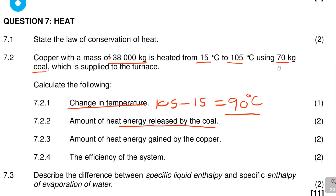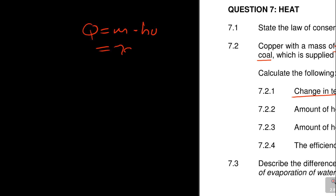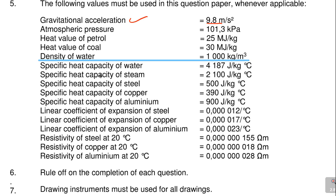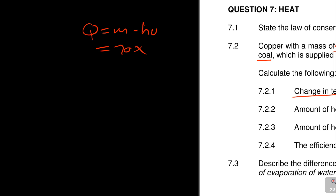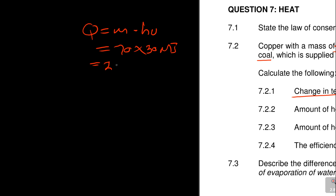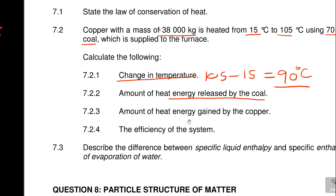So Q equals m times HV — heat value. The mass is 70 kg of coal. Go to the beginning of your notes and you will find the heat value of coal there. The heat value of coal is 30 MJ. So it's 70 times 30, which gives 2,100 MJ — megajoules. That's the amount of heat energy released by coal.